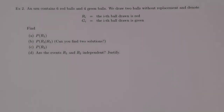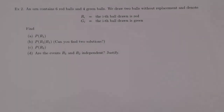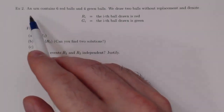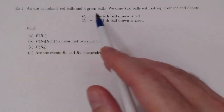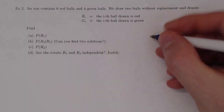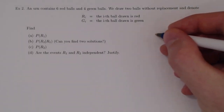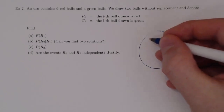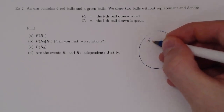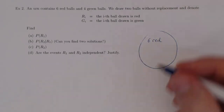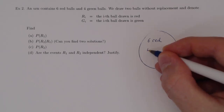Here's the second problem on conditional probability. Here's the situation: we have an urn that contains six red balls and four green balls. Imagine that you have your urn, and there are six red balls and four are green.